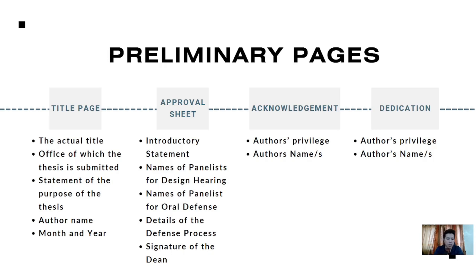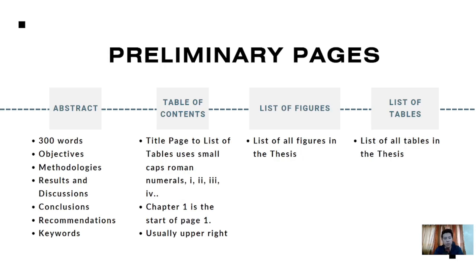Then we have the signature of the dean after the approval of the thesis. The acknowledgement and dedication are at the privilege of the author — you can acknowledge whoever helped you and dedicate the work to whoever you choose. We also have the abstract, which contains more or less 300 words covering the objectives, methodologies, results and discussion, conclusions, recommendations, and keywords.